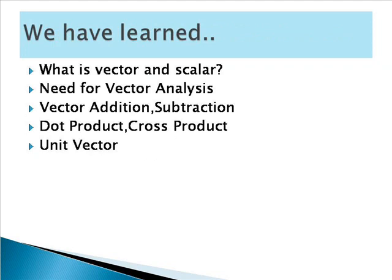Now we have come to the end of the session. To summarize: scalar means it has only magnitude; vector means it has magnitude and direction. The need for vector analysis is because electromagnetic waves travel in space, requiring 3D representation, which is analyzed using vector analysis. We have seen vector addition, vector subtraction, dot product, cross product, and unit vectors. In the next video, we will see what is divergence and curl. If you understand the concepts, kindly subscribe to my channel and share with your friends. Let us understand and grow.